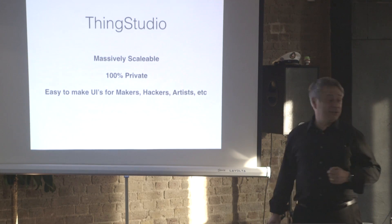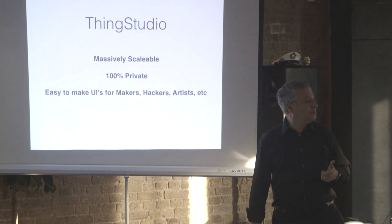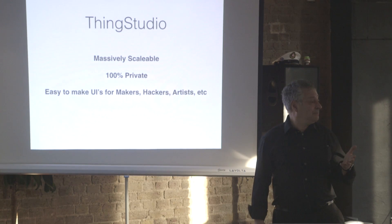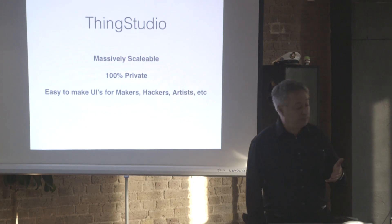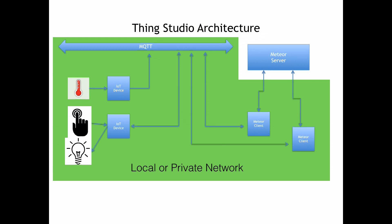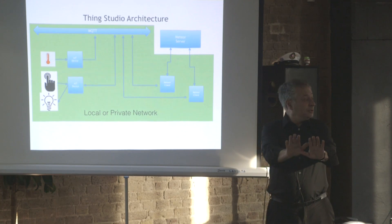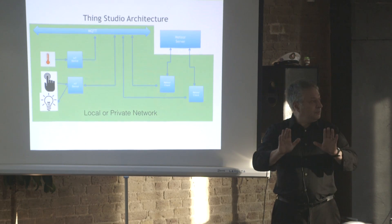So the target for Thing Studio — which is a project we spun out — is we needed massive scalability, real commitment to privacy and security, and we wanted it really easy to make UIs for people who aren't actually web professionals. So we modified the last architecture: we no longer connect the Meteor Server to MQTT. MQTT is now the responsibility of whoever's using it. You can use a commercial router with MQTT built into it, a Raspberry Pi makes a great MQTT broker. We're going to see a lot of home hubs and other kinds of things which are MQTT brokers. So we just pushed off that whole bit of infrastructure to whoever's using it, and that's not a great problem at the end of the day.